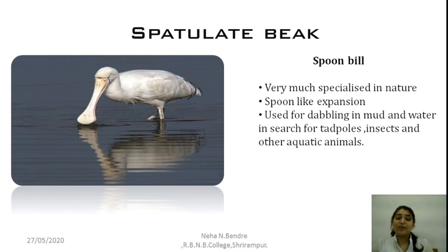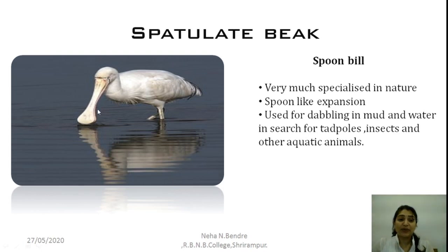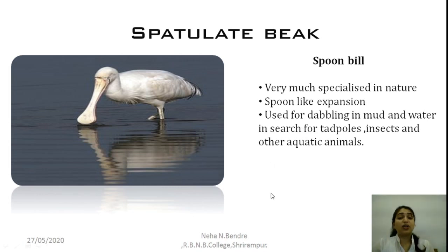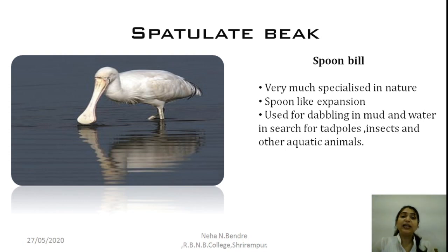The next special kind of beak is the spatulate beak. Spatulate means like a spoon — it has the structure of a spatula, so it is called a spatulate beak. It is very specialized, having a spoon-like expansion used for dabbling in mud and water in search of tadpoles, insects, and other aquatic animals. The bird is called a spoonbill, named according to this spatulate beak, and is found in water bodies.